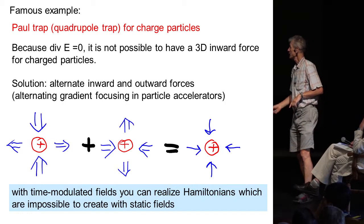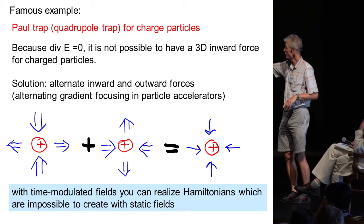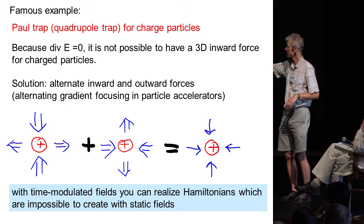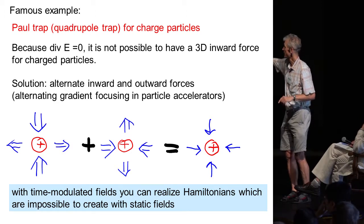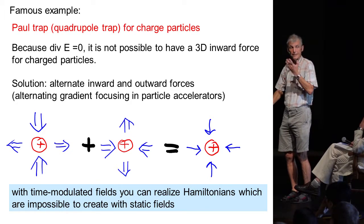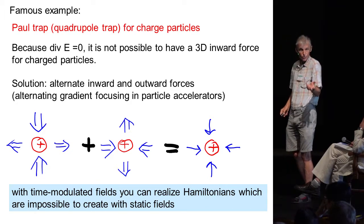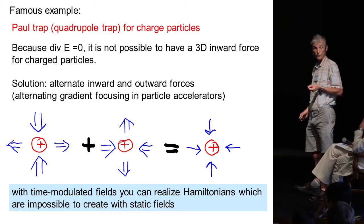If you want to trap a particle you need an inward force from all directions, the divergence of the force has to be zero and this violates Maxwell's equations for the electric field. However if you alternate a quadrupole field which is now here an inward electric field in the vertical direction, it's repulsive in the horizontal, but then you invert it and you modulate between the two, the time average is not zero as you may naively assume.